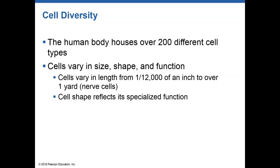We're going to get right into the next part of chapter three, talking about cell diversity. The human body contains over 200 types of cells. These cells vary in shape, size, and function. Remember in chapter one, we talked about structure determining function — the structure of the cell determines its function. Some cells are super small, while others can be very large, even macroscopic, and their structure and size determines how they function.